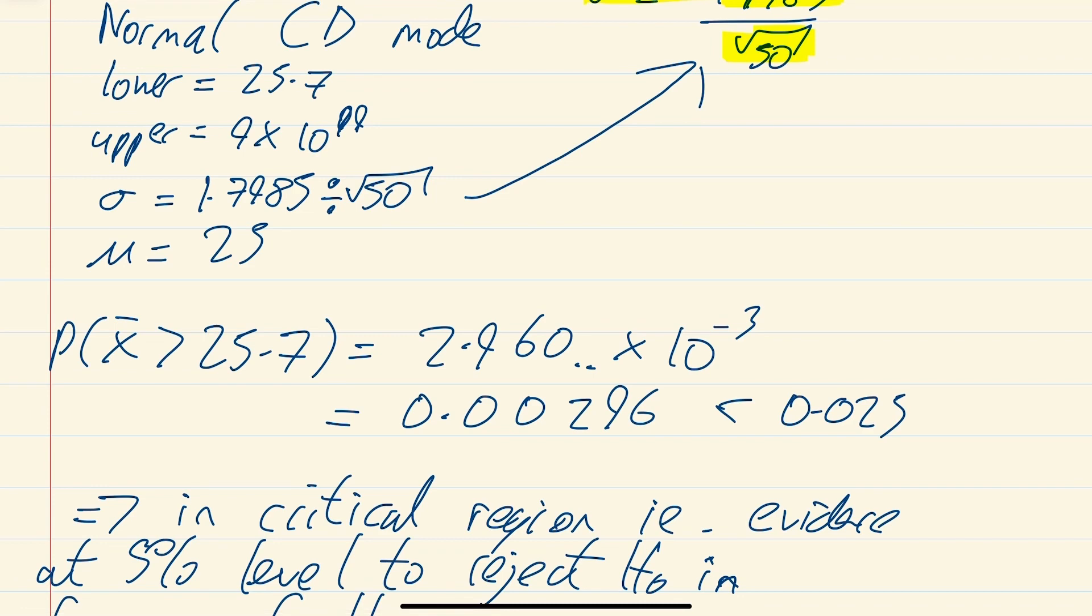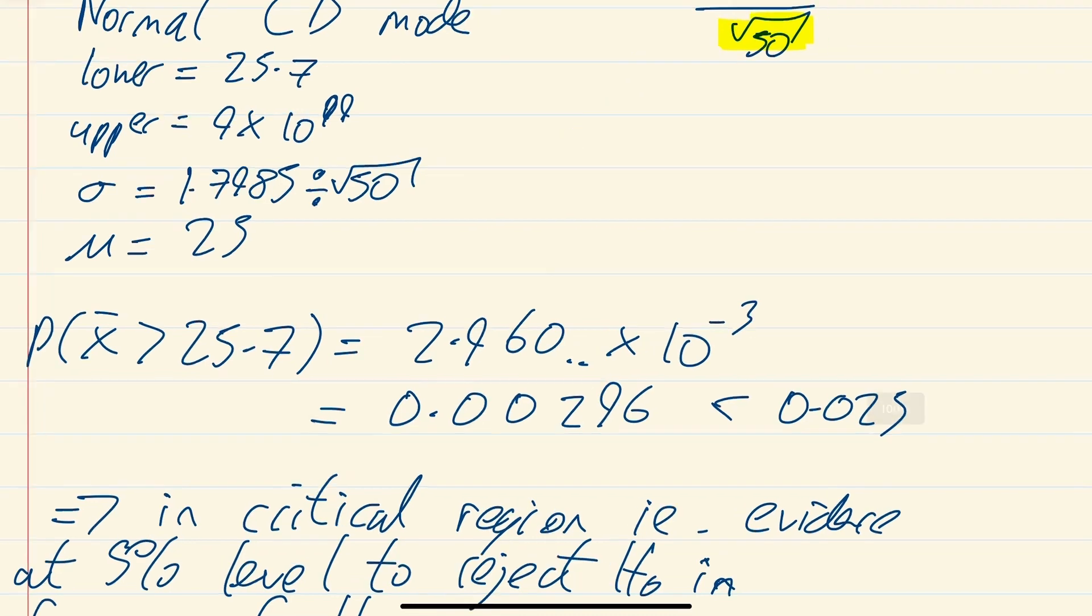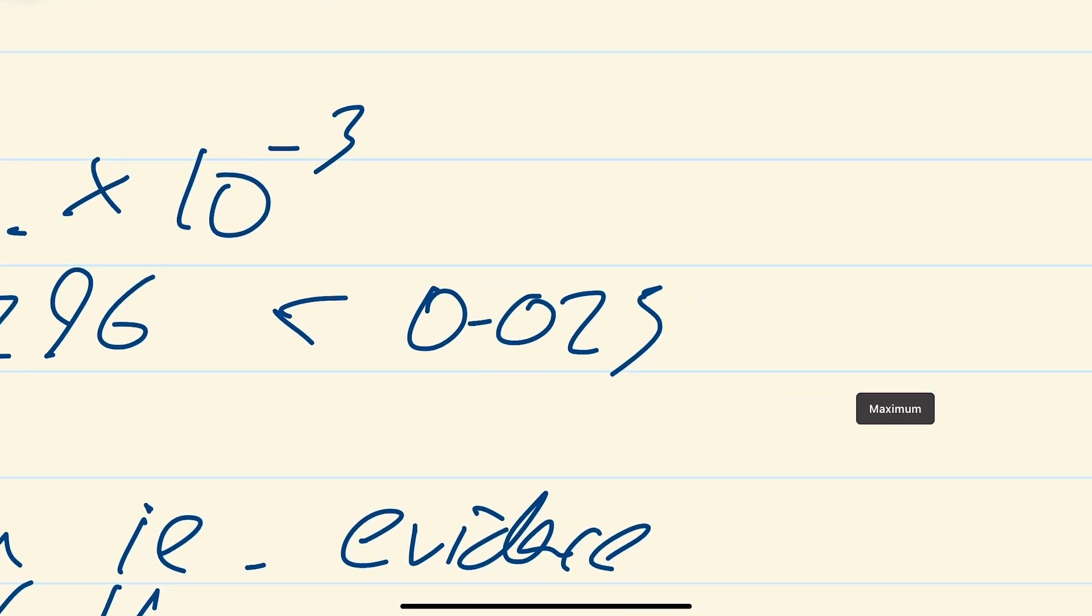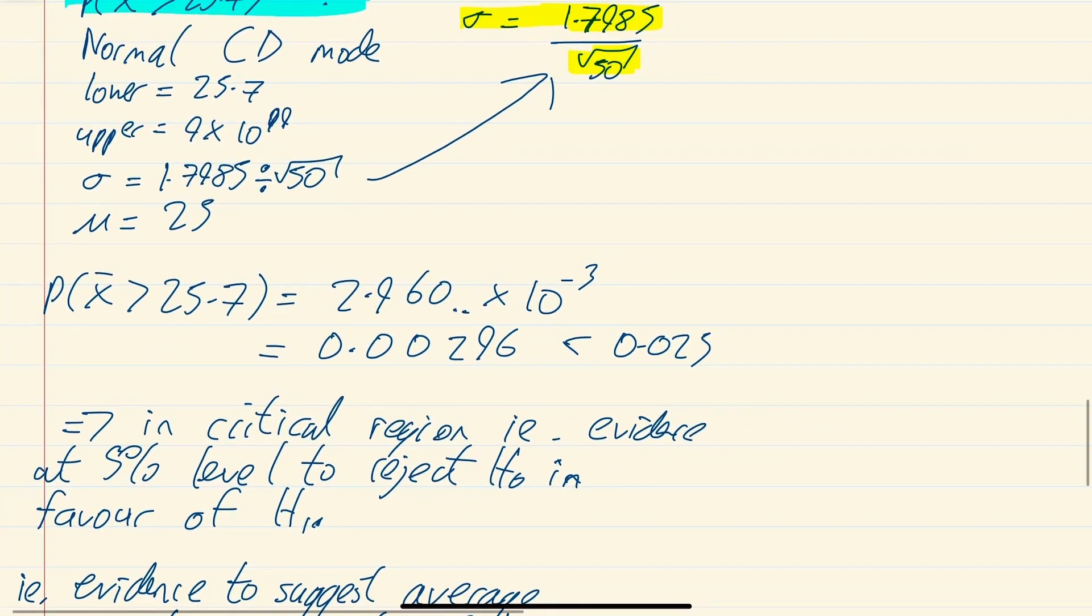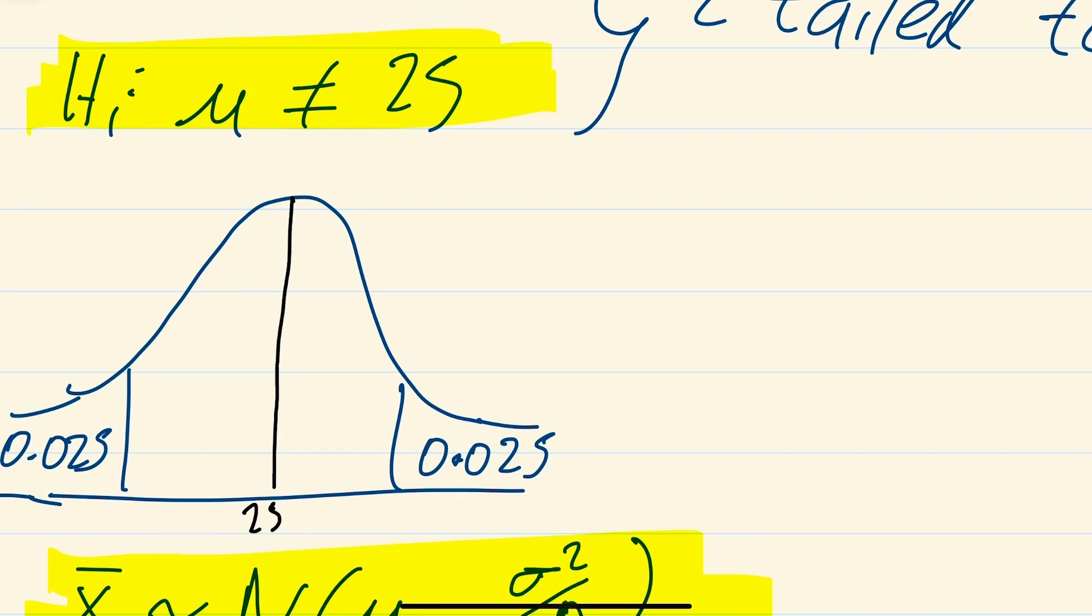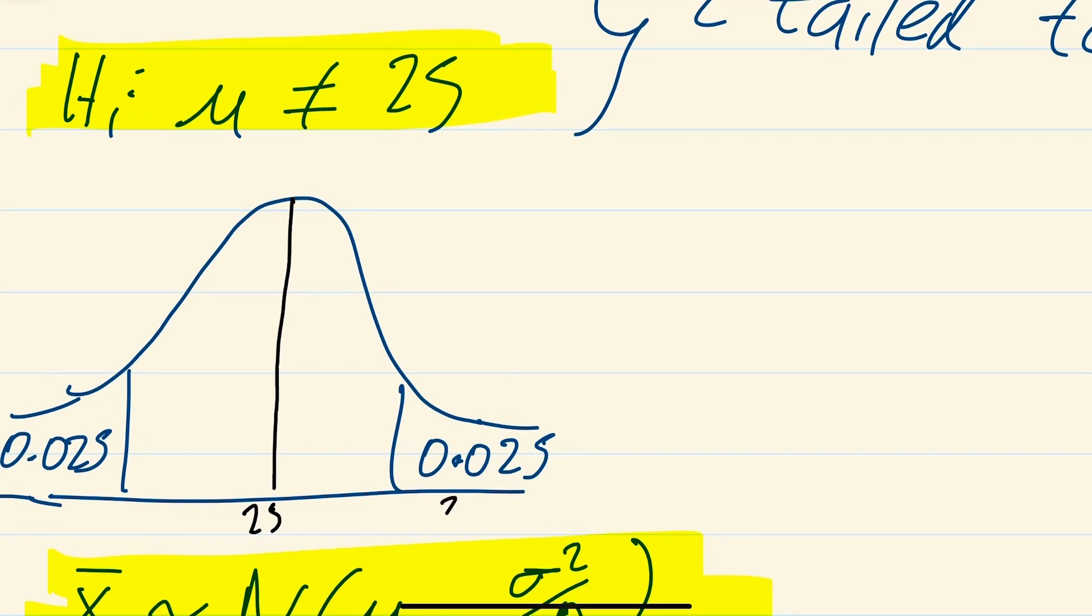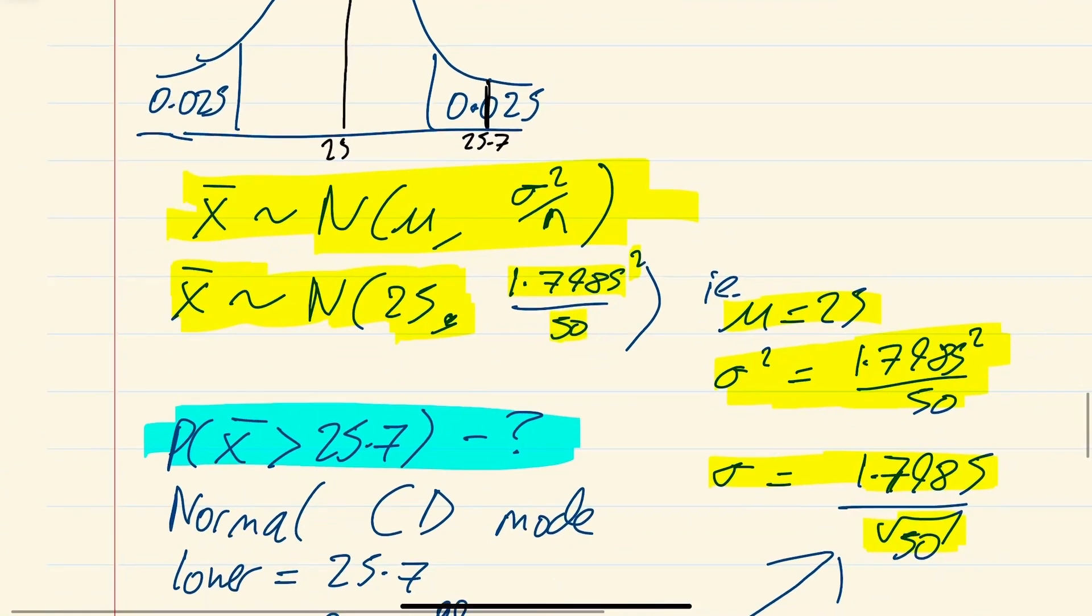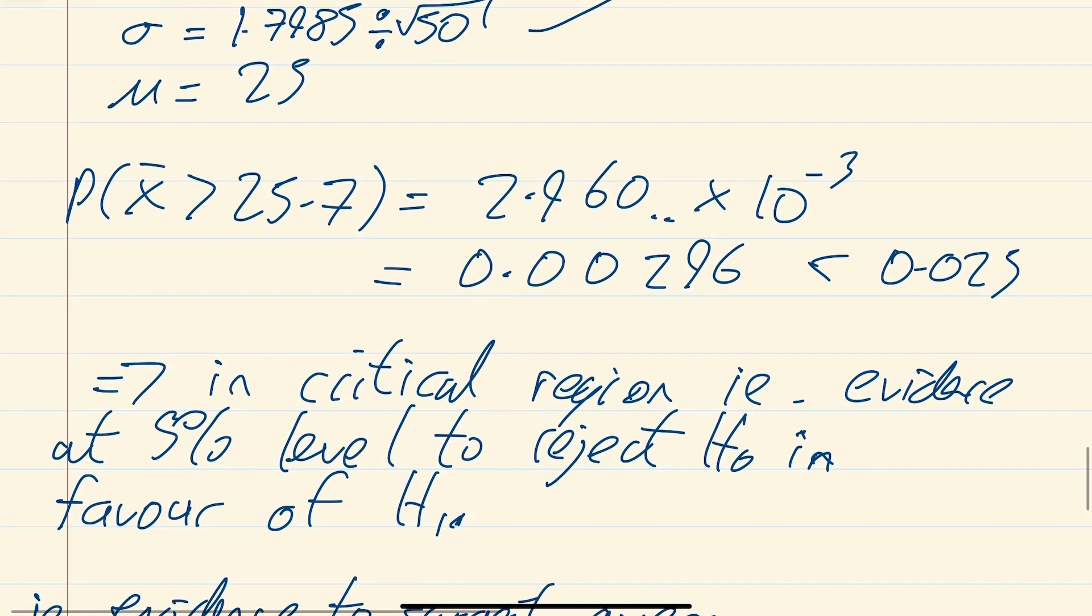That is way less than 2.5%. So that means it's in the critical value. If you imagine that's where 25.7 is, it would have been in here somewhere. So it's in the critical value.